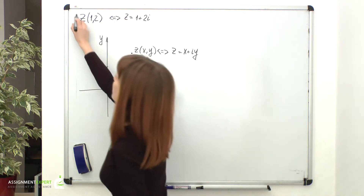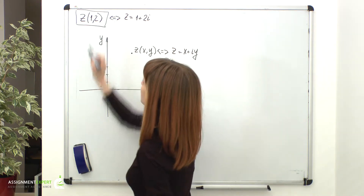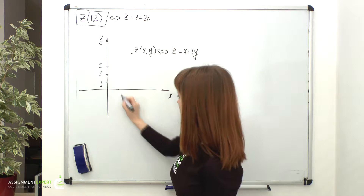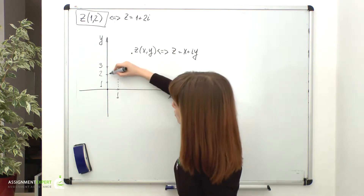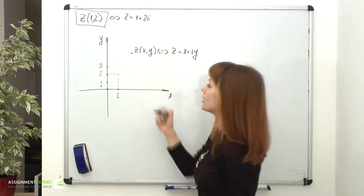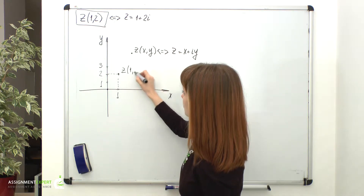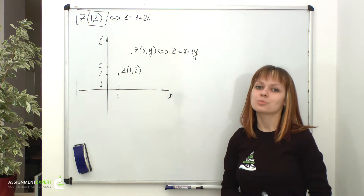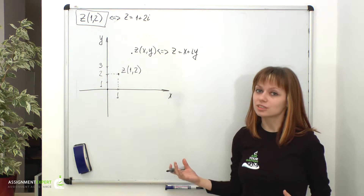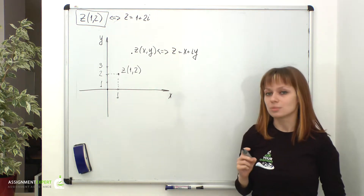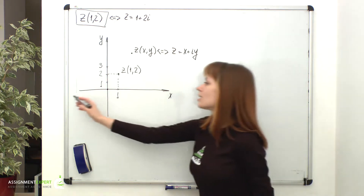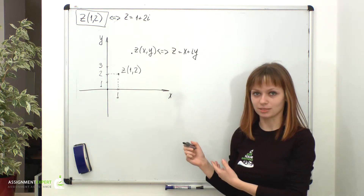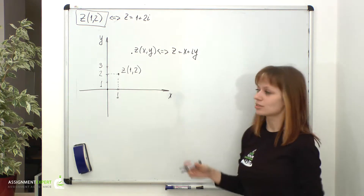Now let's consider an example. Here we have complex number z(1, 2). Let's find it on the plane. Its real part is equal to 1 and its imaginary part is equal to 2. Exactly as we would on a regular plane, we find our point right here — the point with coordinates 1 and 2. The coordinate plane on which complex numbers are shown is called the complex plane. Complex numbers are considered an extension of real numbers, and they naturally form a coordinate plane with the x-axis of real numbers and y-axis of imaginary numbers, corresponding to all points on the plane. This way of showing complex numbers is called rectangular coordinate representation.